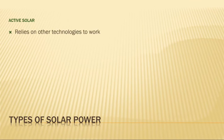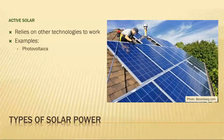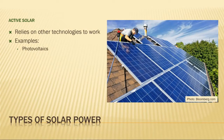Some types of solar power are referred to as active solar. These systems rely on other technologies to function. For example, photovoltaic power, or PV power, is what most people think of when they talk about solar. If a house in your neighborhood gets its power from solar panels on the roof, that would be photovoltaic power.